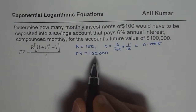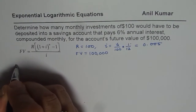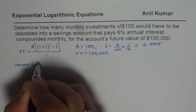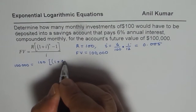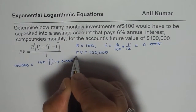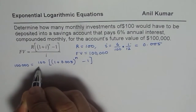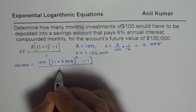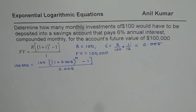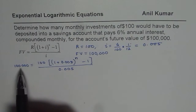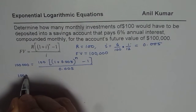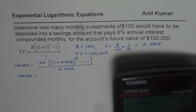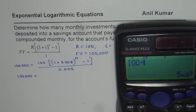Now substituting, what we get is: 100,000 equals 100 times (1 plus 0.005) to the power of N minus 1, divided by 0.005. At this stage we can simplify the right side. We divide 100 by 0.005, which gives us 20,000.